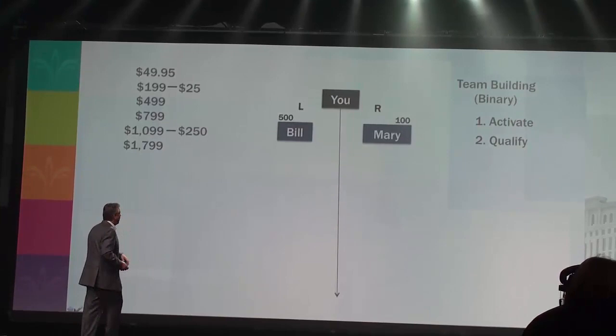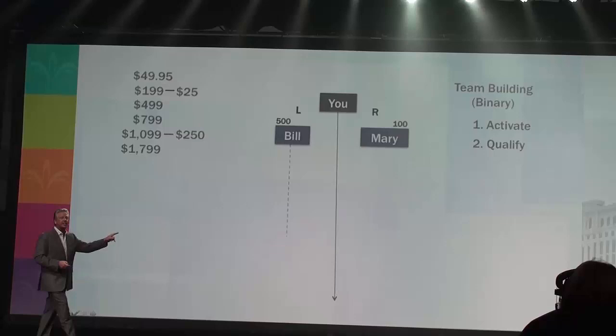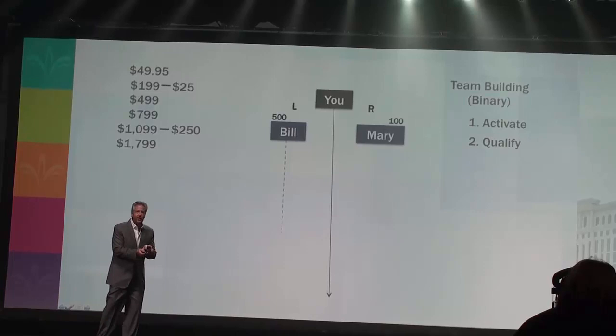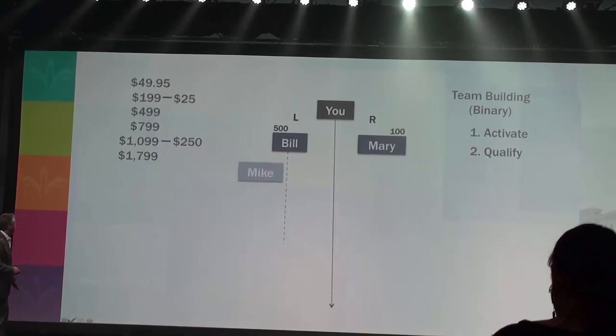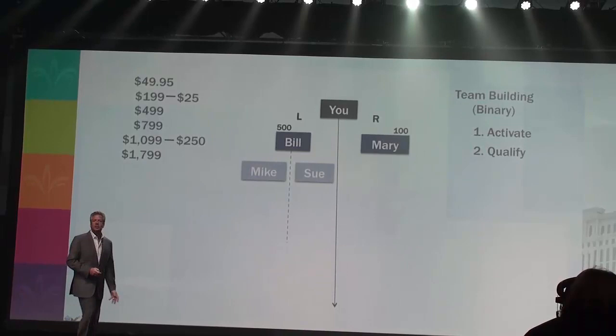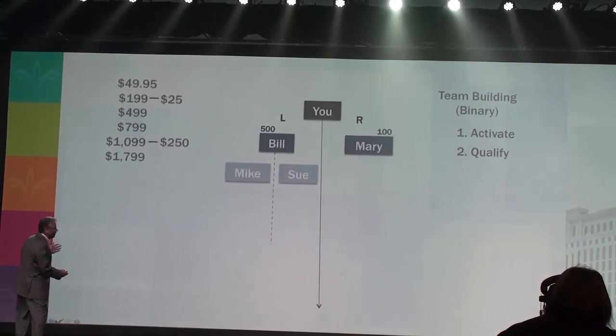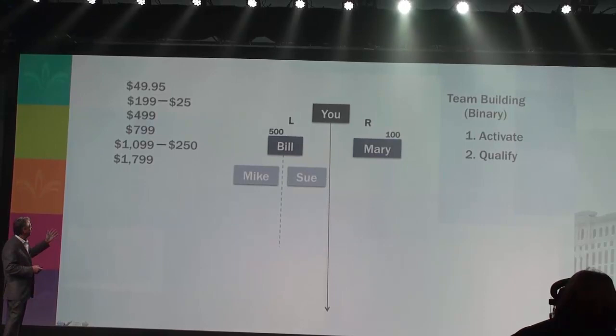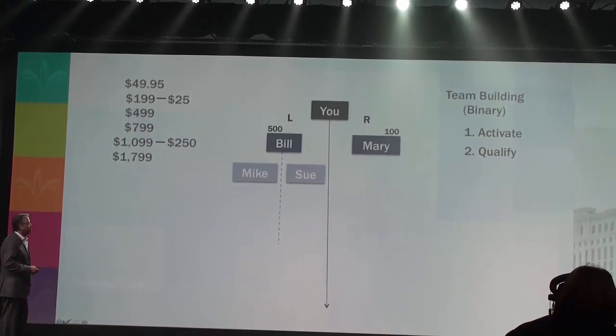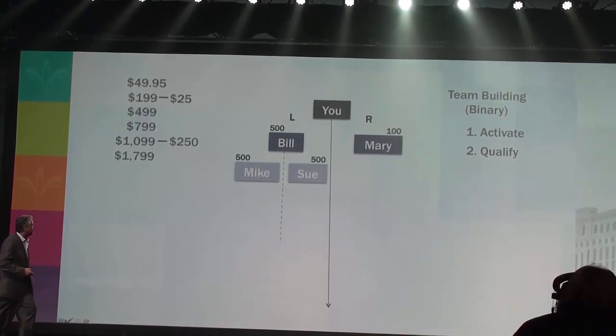Look at Bill. He's come in and activated the program. The next thing Bill's going to do is qualify. Bill's sending out the two-minute video on Instantly Ageless, the phone's ringing off the hook, and he's got two friends — Mike and Sue — who joined him in the business. He places them on the left and right side. Mike and Sue have to activate. They both order the Ambassador Pack for $1,099. Bill makes $250 times two — $500 — and 500 points goes into the plan for each one of those orders.